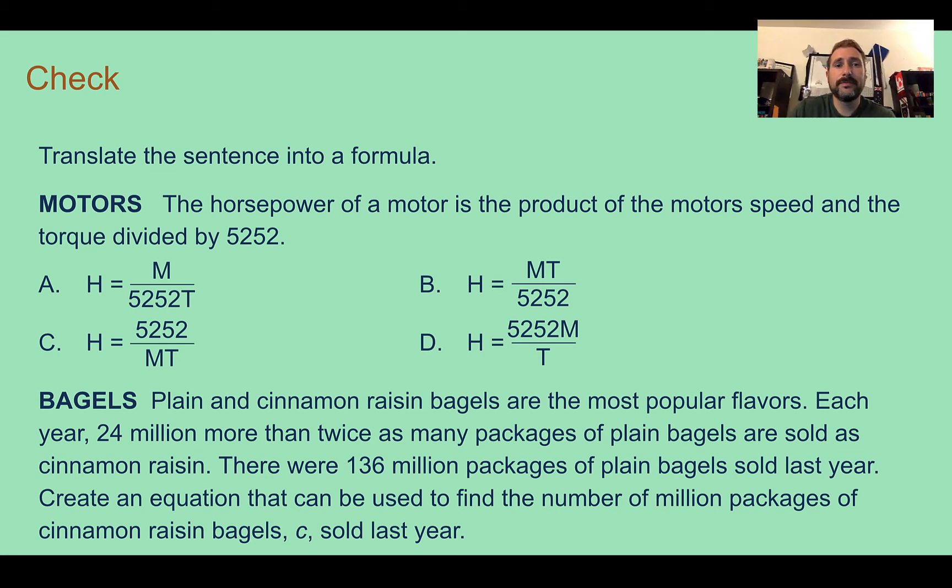Check your answer. For the first one, we're saying horsepower, which is going to be H, is equal to the product, which means multiplication of the motor's speed. So I'm guessing based on the variable they used is M for speed and then T for torque.